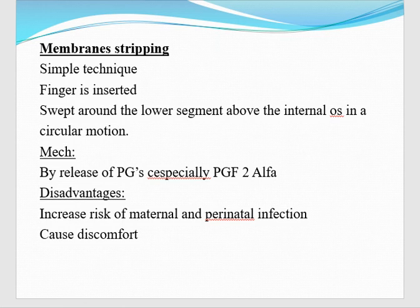Other mechanical methods for induction of labor. This is membrane stripping or sweeping. It is a simple technique — we will insert inside the vagina and then sweep around the lower segment above the internal os in a circular motion. Mechanism is by release of prostaglandins, especially prostaglandin F2 alpha, which is released. Then it will start contractions. But the disadvantage is increased risk of maternal and perinatal infections, and it will cause discomfort to the mother.